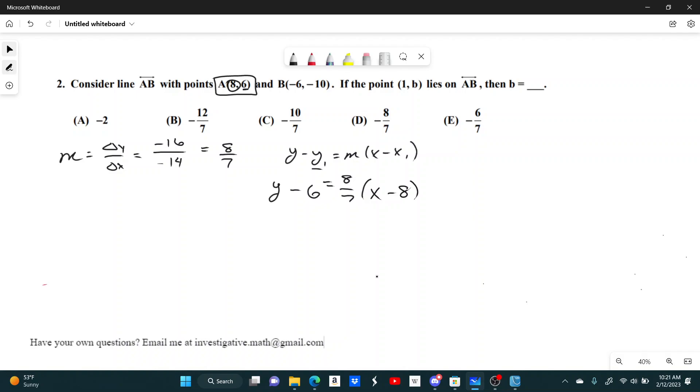Now I have an equation that relates Y and X. What's the question actually asking for? It says if the point (1,B) lies on AB, then solve for B. This is basically just saying if X equals 1, then what does Y equal? So if I plug 1 into this equation, you get Y equals 8 sevenths times (1 minus 8) plus 6. 1 minus 8 is negative 7. Then 8 sevenths times negative 7 is negative 8. Plus 6 will give you negative 2. And that's answer choice A.